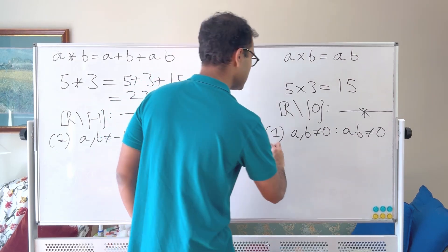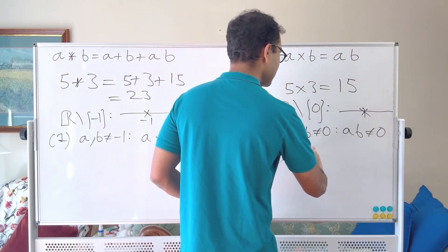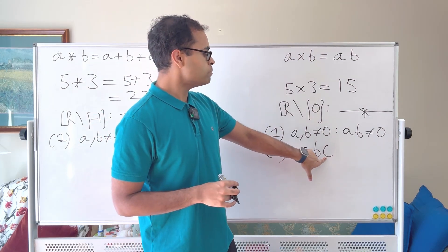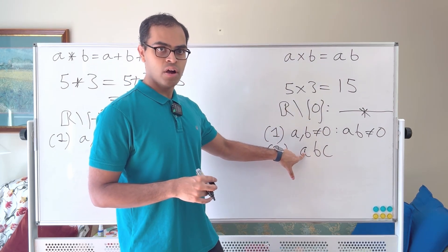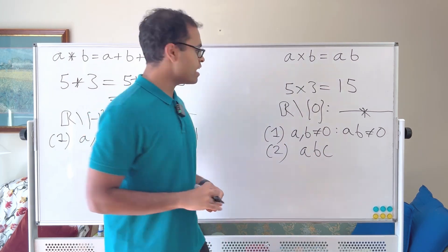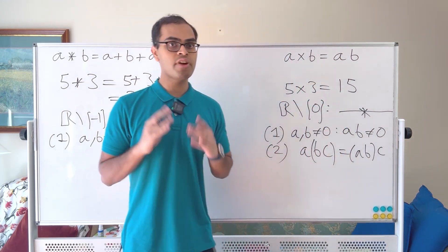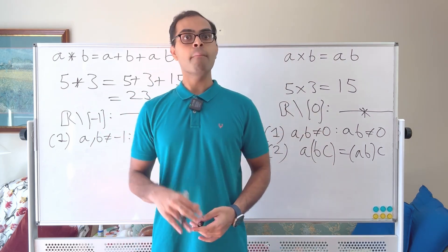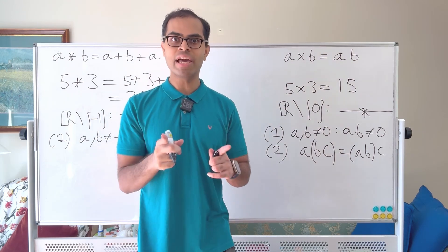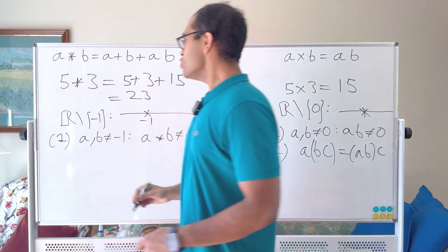The next property of multiplication is a fundamental property we take for granted, called associativity. When you multiply three numbers a, b, and c, there is no ambiguity: I could multiply b and c first and then multiply a, or multiply a and b first and then multiply c — either way gives the same result. Associativity is not true for all operations; it's a very special property and one of the axioms of a mathematical group.